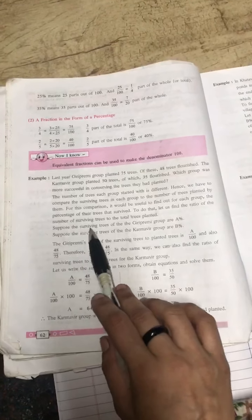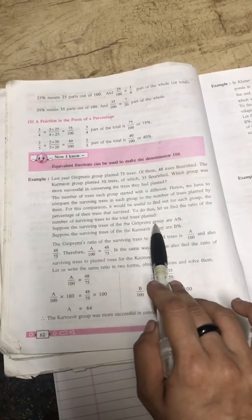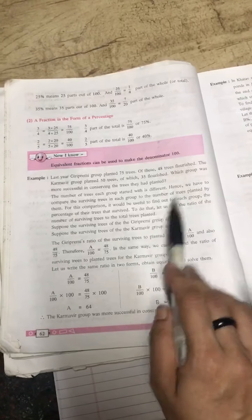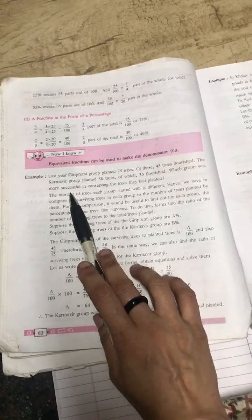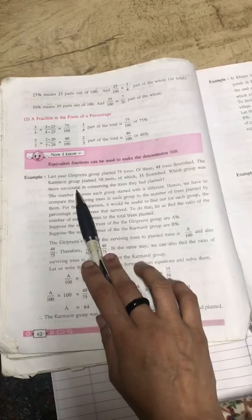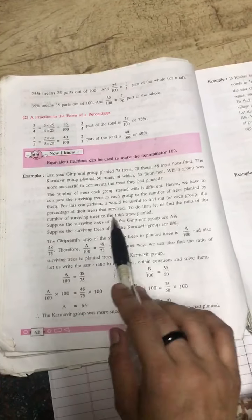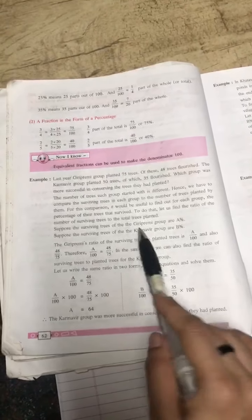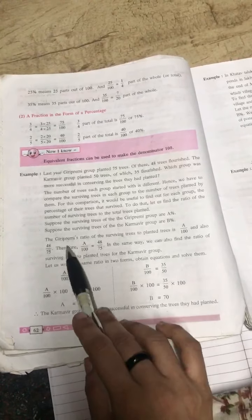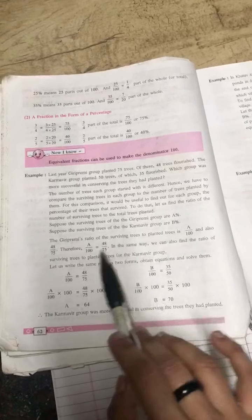First thing we need to make a ratio of both the groups. Suppose the surviving trees of the Giri Preemi group are a, because we don't know how much trees are survived, so we are taking as a for Giri Preemi and b for Karamvir. Now first thing we will make the ratio and then we will find out the percentage.